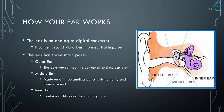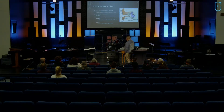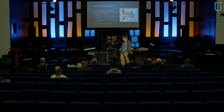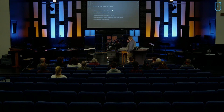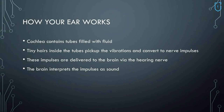The middle ear is made up of the three smallest bones in the body, which amplify and transfer the sound. The inner ear has the cochlea and auditory nerve. Sound waves travel through the outer ear down the ear canal, striking the eardrum and causing it to vibrate. The vibrations pass through the three small bones, then transmit to the cochlea, which contains tubes filled with fluid. Tiny hairs inside the tubes pick up vibrations and convert them to nerve impulses, which are delivered to the brain via the auditory nerve.